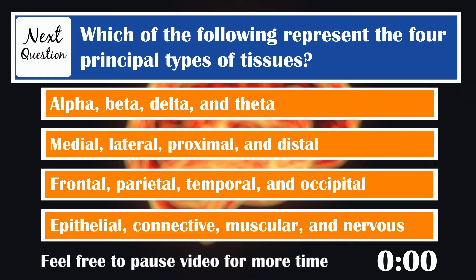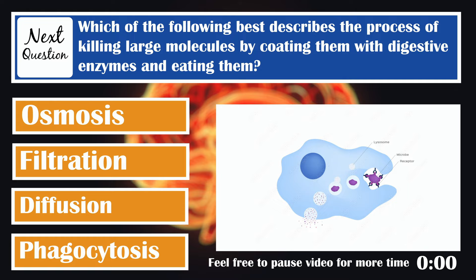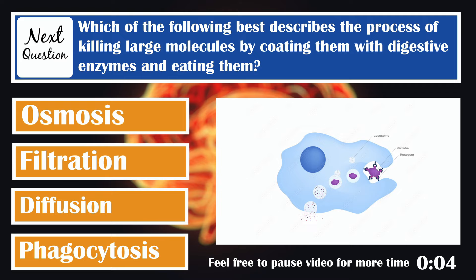Which of the following represents the four principal types of tissue? Epithelial, connective, muscular, and nervous. Which of the following best describes the process of killing large molecules by coating them with digestive enzymes and eating them? During phagocytosis, a piece of the cell membrane wraps around large molecules and draws them inside the cell, where the vesicle fuses with a lysosome that coats it with digestive enzymes and eats it.